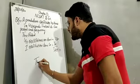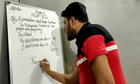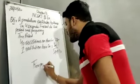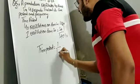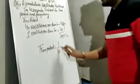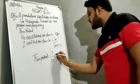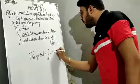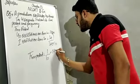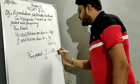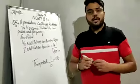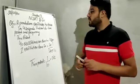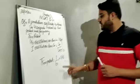So the time period is 1 upon 10, which means 0.1 seconds. The time period of this pendulum is 0.1 second.